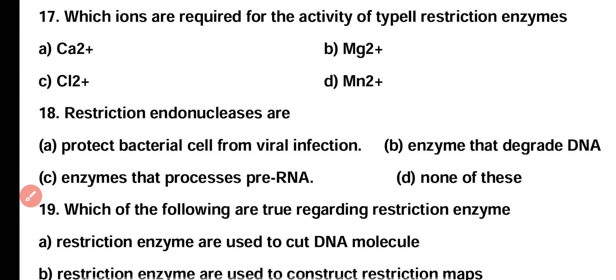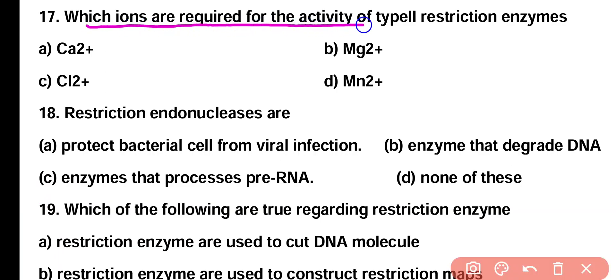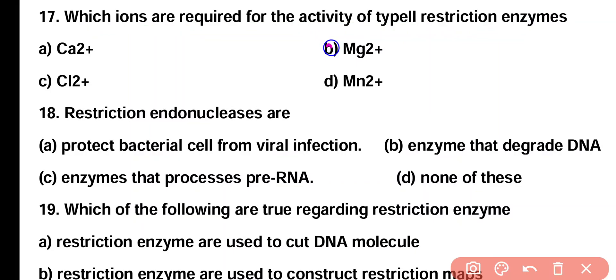Question 17. Which ions are required for the activity of Type 2 restriction enzyme? Option A: calcium ions, Option B: magnesium ions, Option C: chloride ions, Option D: manganese ions. Correct answer is Option B. Magnesium ions are required as a co-factor for the activity of Type 2 restriction endonuclease enzymes.